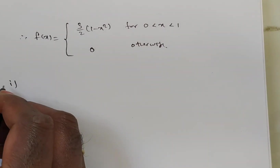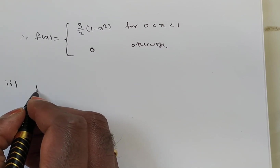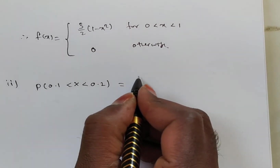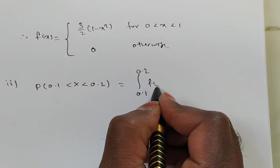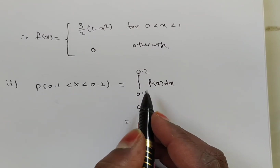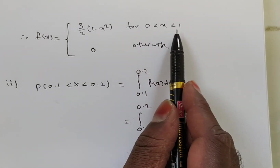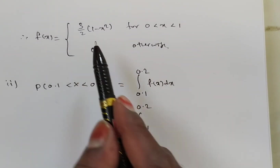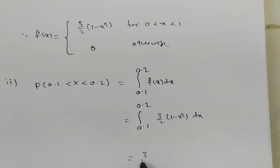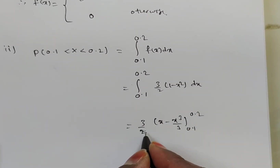Now the second part: find the probability that the variable takes a value between 0.1 and 0.2. That is P(0.1 < X < 0.2), which equals the integral from 0.1 to 0.2 of f(x) dx. Since 0.1 and 0.2 are between 0 and 1, the function is (3/2)(1 minus x squared). So we compute the integral from 0.1 to 0.2 of (3/2)(1 minus x squared) dx.